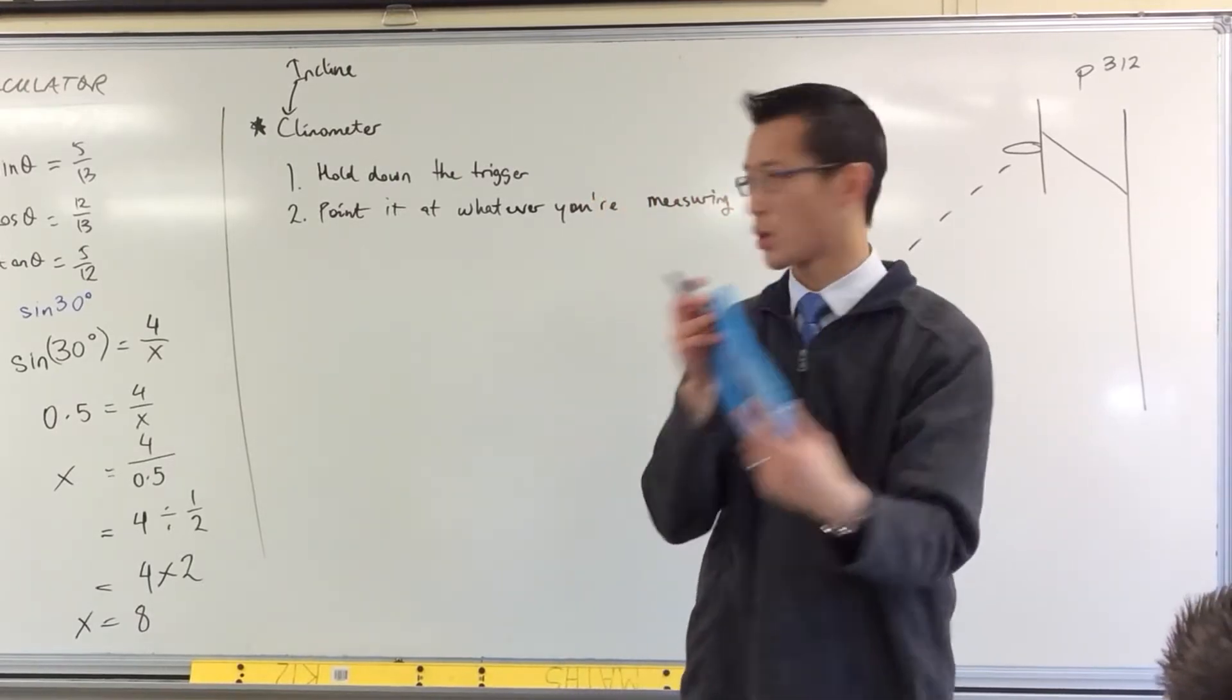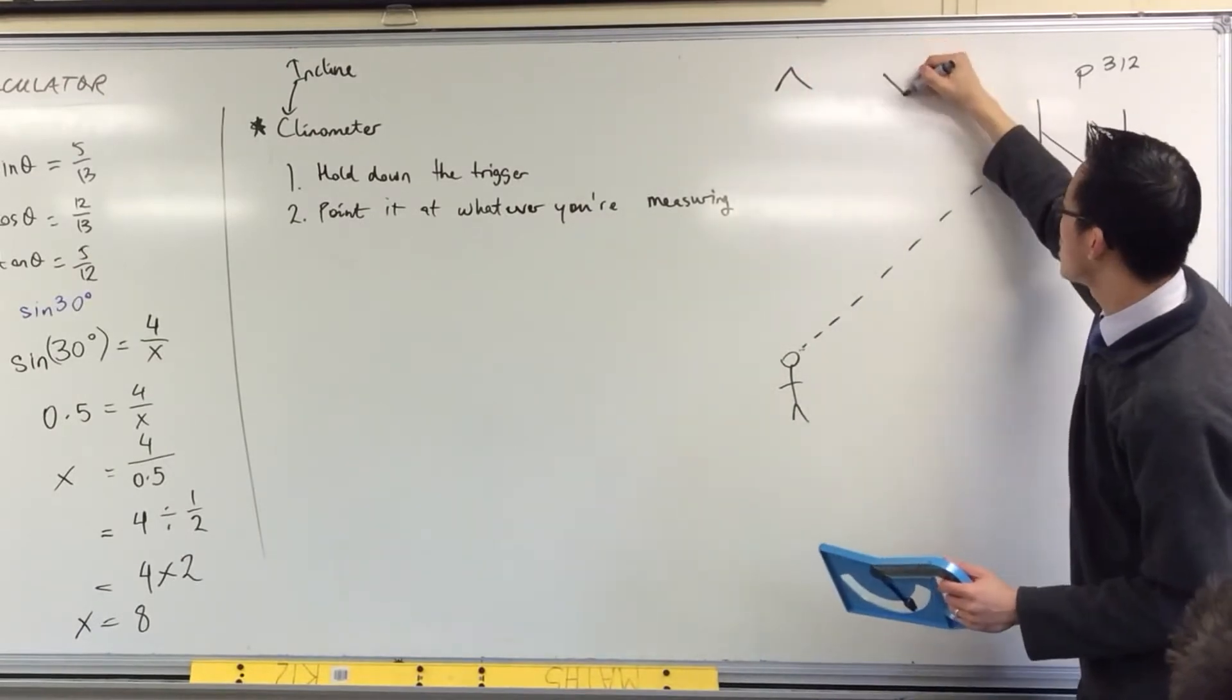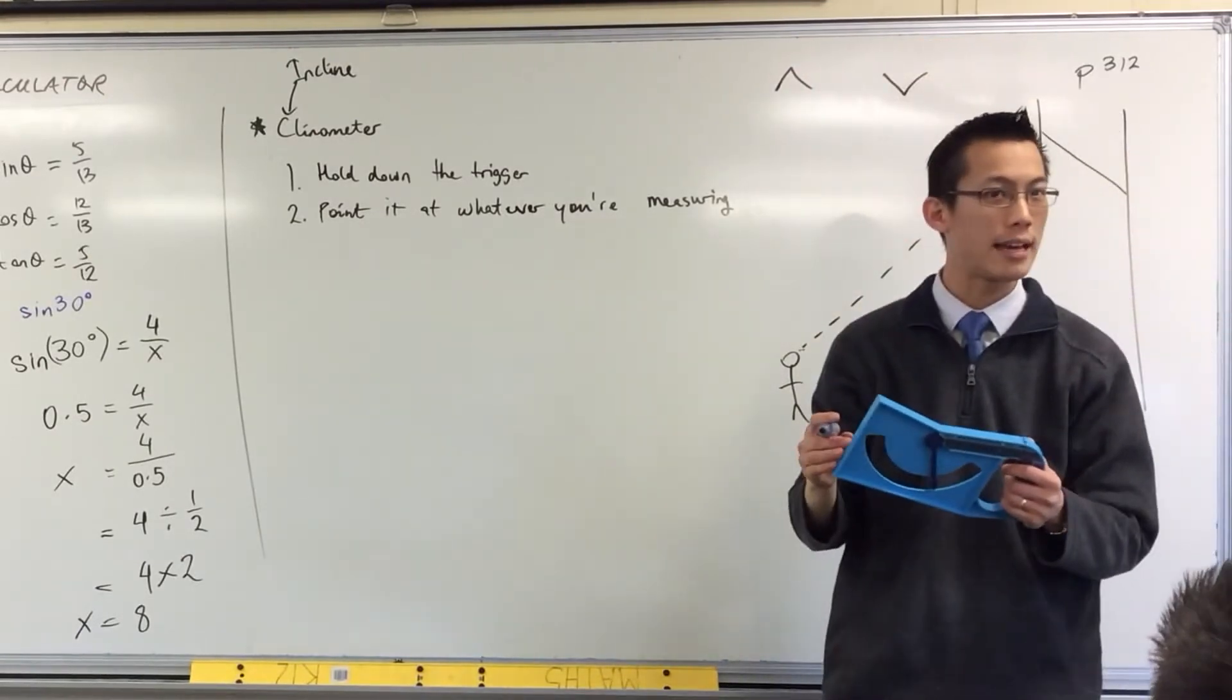And then on the end there's a sort of dip. So it looks like this at the end, and then closer to you there's a part like that. Does that make sense?